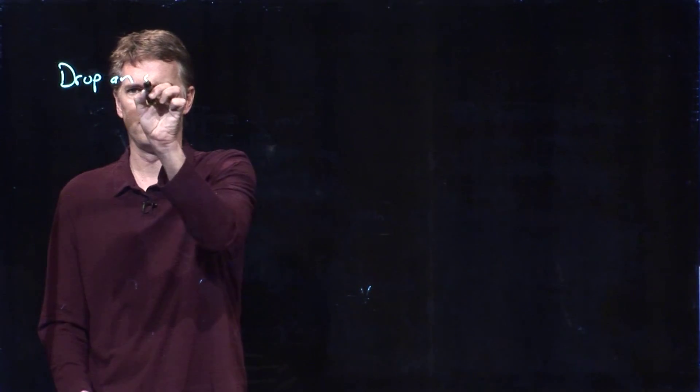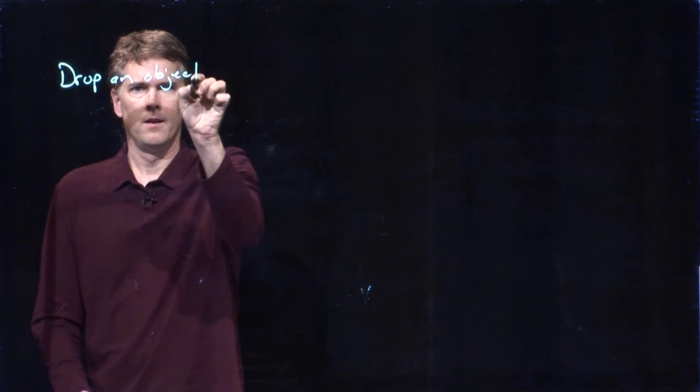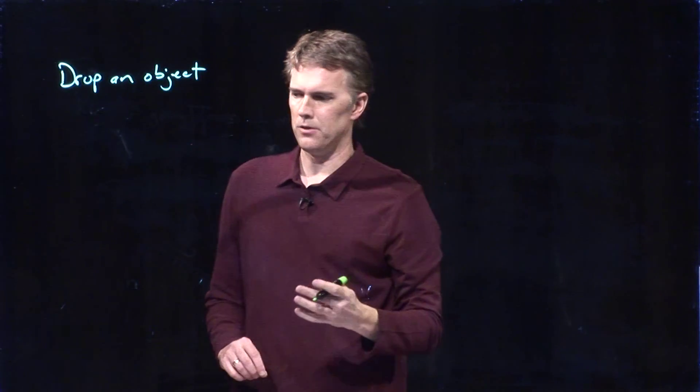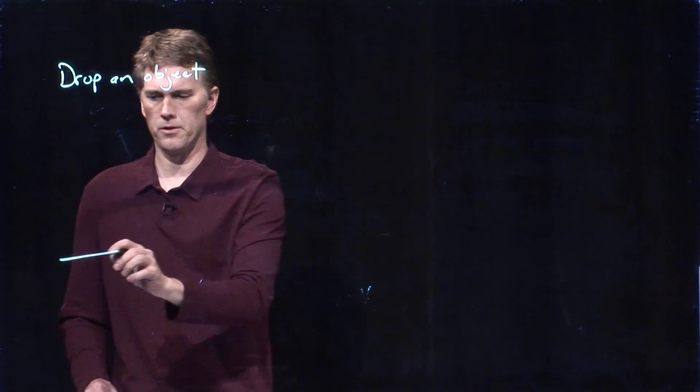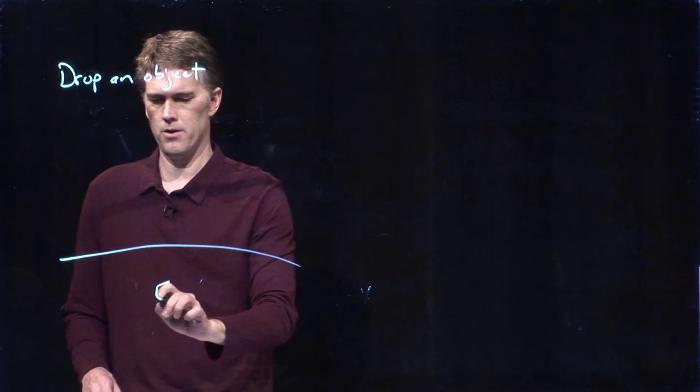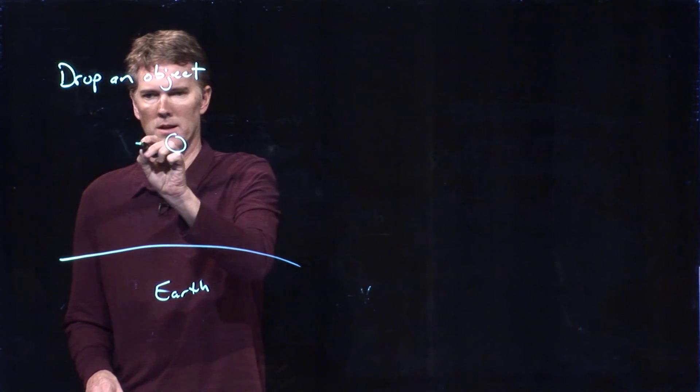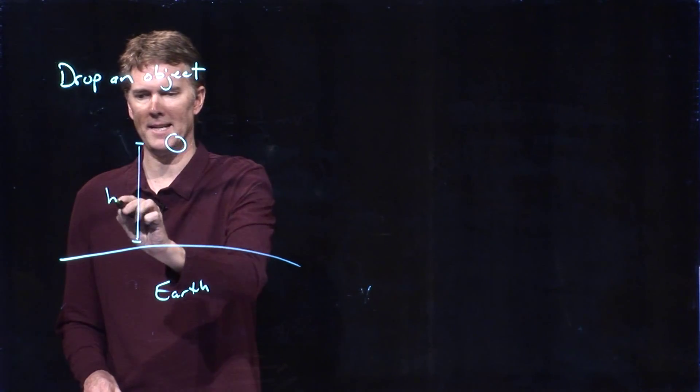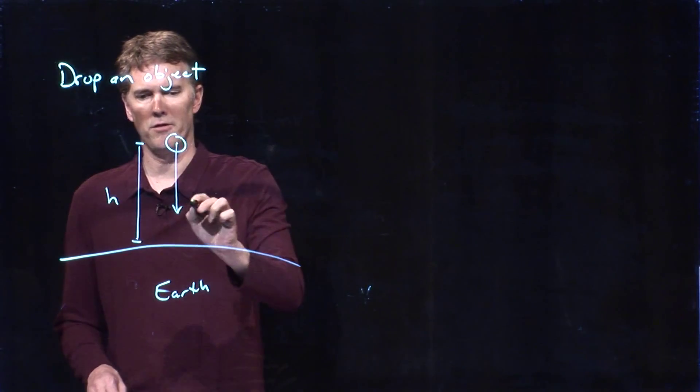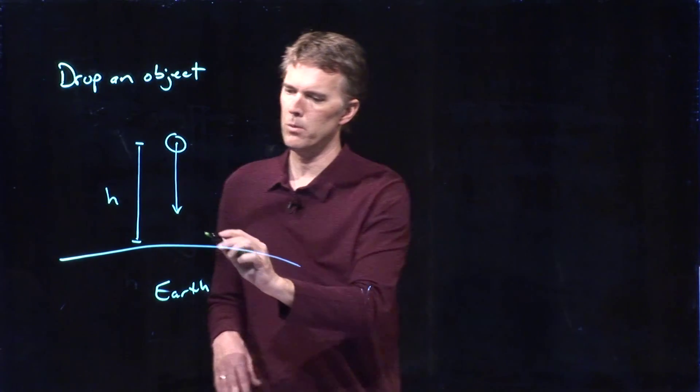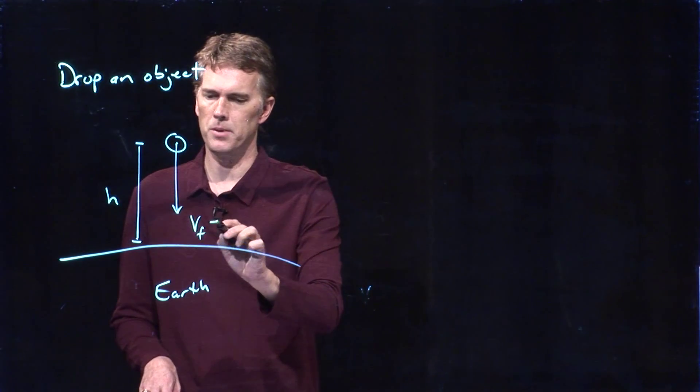Okay, let's drop an object straight down now and see if we can calculate the speed just before it hits the ground. So here we are on the earth, and we're going to take an object and let it go from height h. It's going to fall towards the earth, and we want to know what this final speed is.